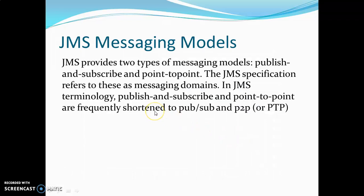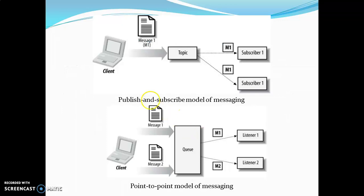JMS has two messaging models: one is Publish and Subscribe, and the other is Point-to-Point (P2P). In the Publish and Subscribe model, the client sends one message using a topic, and if there are subscribers to that particular topic, messages M1 and M2 will be delivered to subscriber one and subscriber two. Whatever messages are sent by the client are delivered to the subscribers.